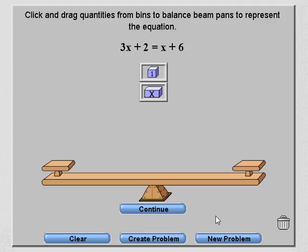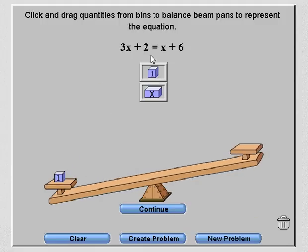Now, you don't actually have to put the 3x plus 2 on the left and the x plus 6 on the right. You can choose which side, but I will put 3x plus 2 on the left. So the first thing I'm going to do is put two unit blocks on the left-hand side.